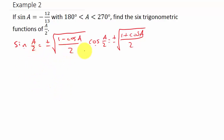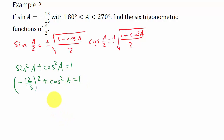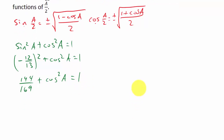In order to find sine A over 2 and cosine A over 2, we need to know what cosine A is. All they give us is sine A, but we can find cosine A using the Pythagorean identity: sine squared A plus cosine squared A equals 1. I'll plug in negative 12 over 13 for sine A. So (negative 12 over 13) squared plus cosine squared A equals 1, which gives 144 over 169 plus cosine squared A equals 1.